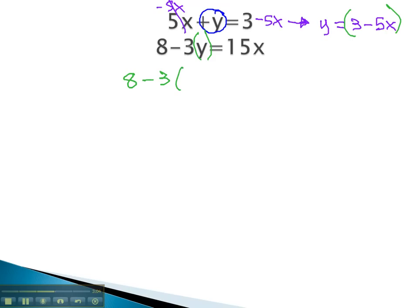8 minus 3y, which is now 3 minus 5x, is equal to 15x. Again, we'll start by distributing through the parentheses, and get 8 minus 9 plus 15x equals 15x.